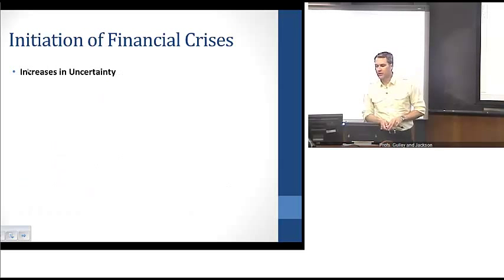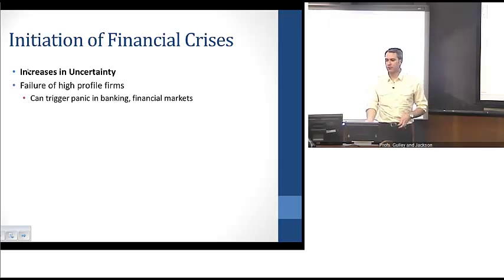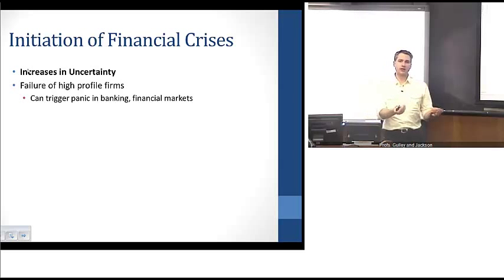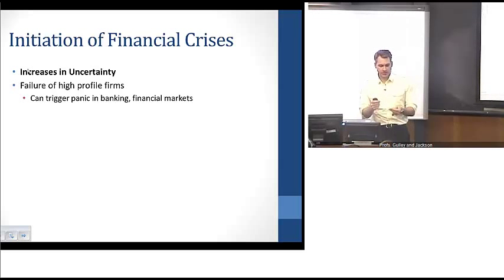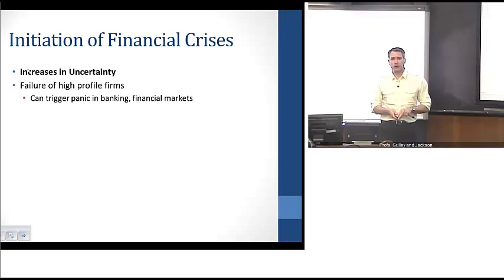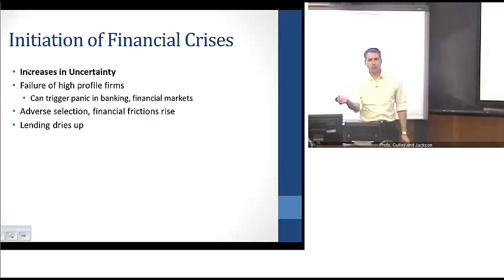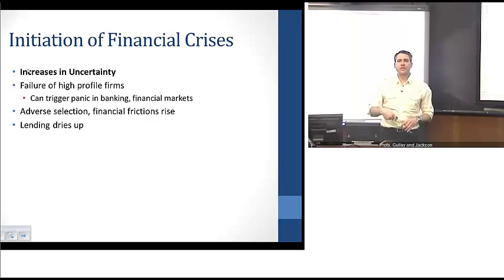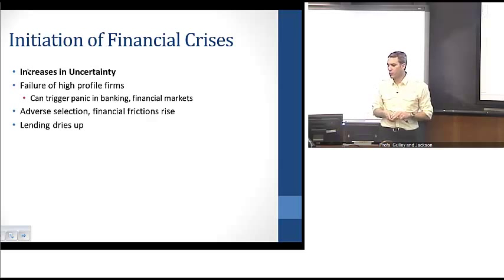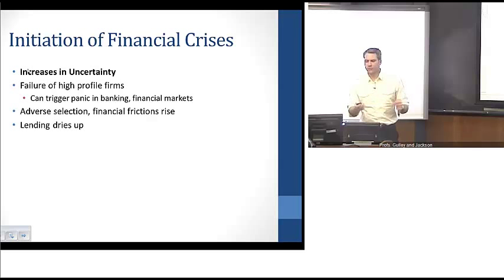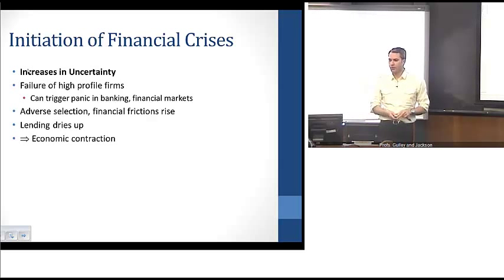A third trigger is increases in uncertainty, which can occur through failure of high-profile firms — in the 2008 crisis, Lehman Brothers, AIG, and other large financial firms failed or came close to failure and needed bailing out. This heightened uncertainty triggers panic in financial markets. As we've seen in previous examples, increases in uncertainty and financial friction lead to higher adverse selection and moral hazard problems, lending dries up, and we end up in economic contraction.